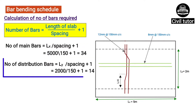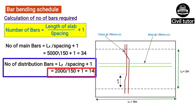Number of distribution bars required = Ly ÷ spacing + 1. Ly is 2000mm and spacing is 150mm. On substituting these values, we get the number of distribution bars equal to 14.